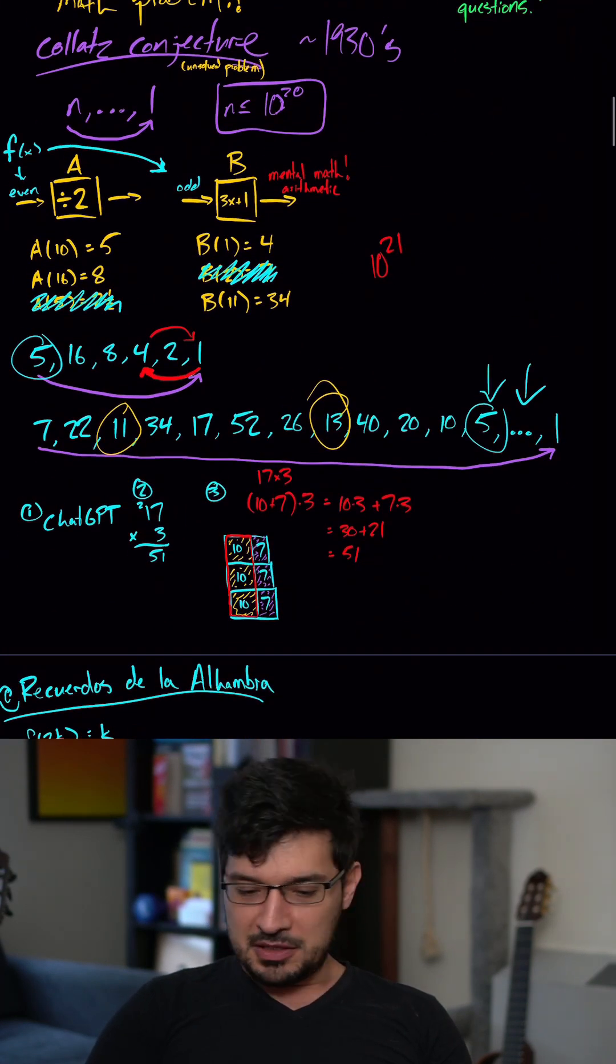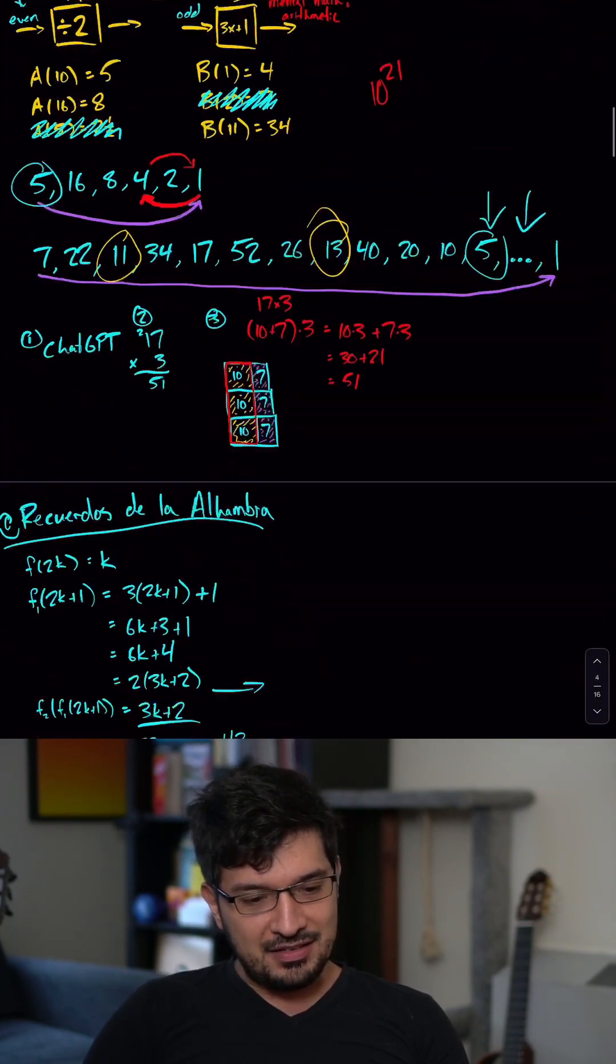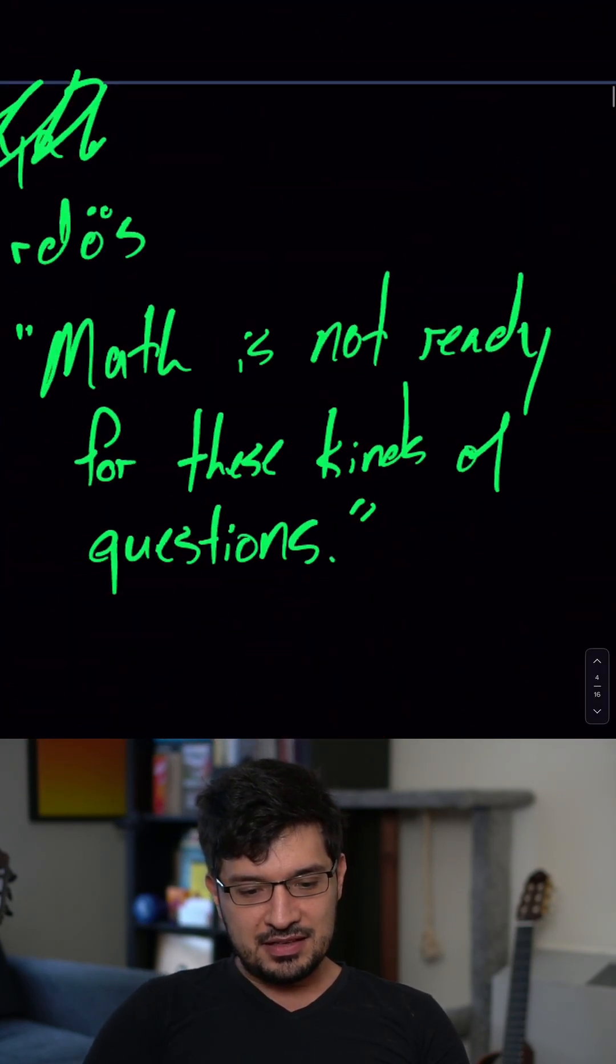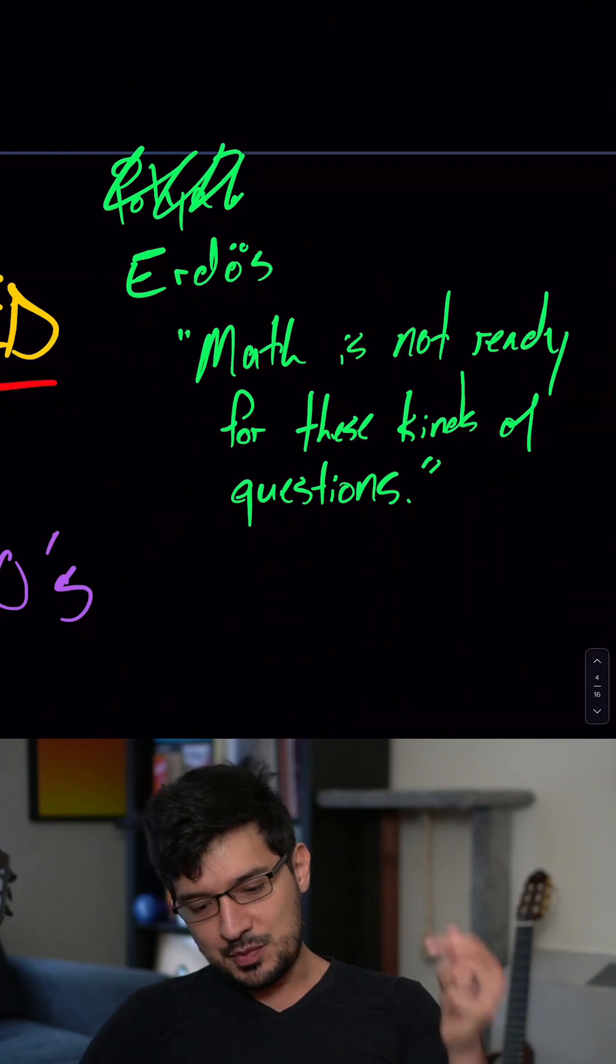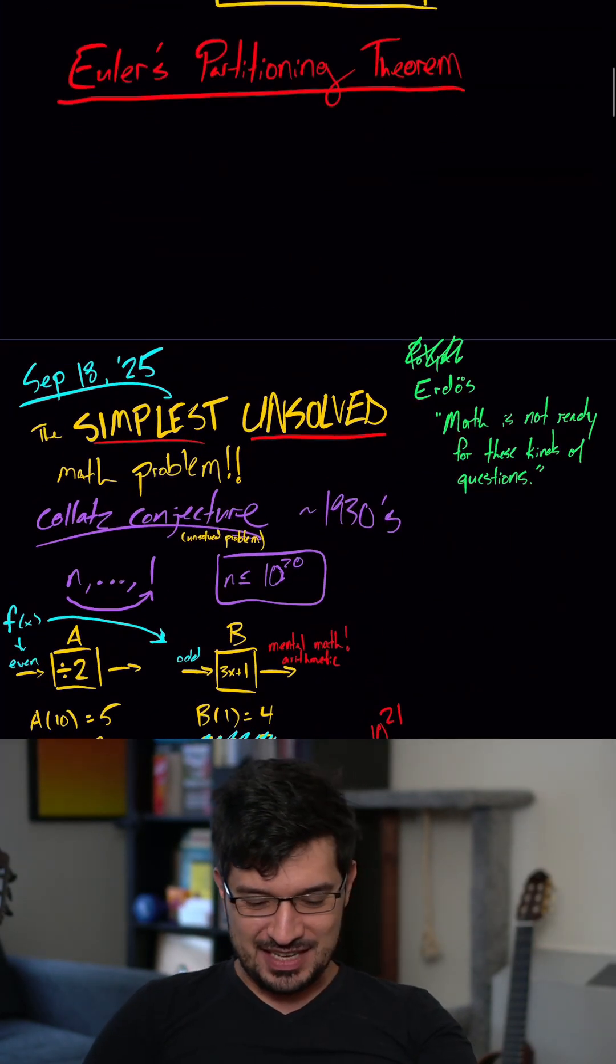So I showed a couple examples. We've got five, we've got seven. And yeah, this guy says math is not ready for these types of questions. I think it was him, I forget.